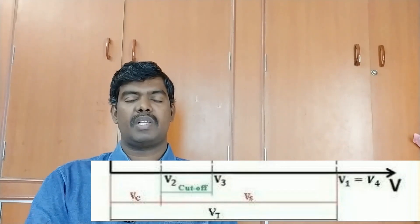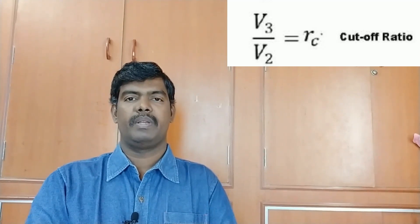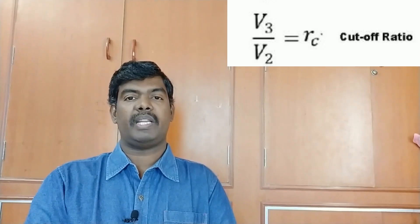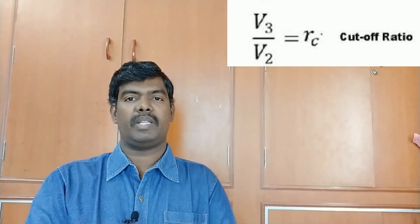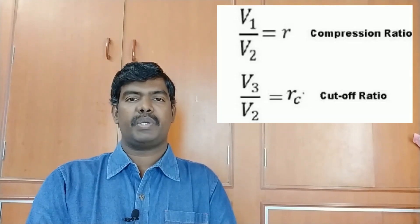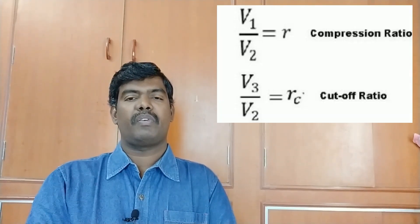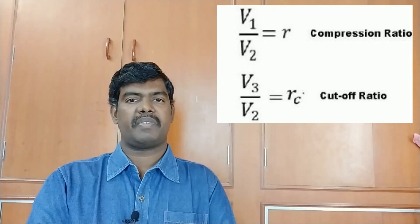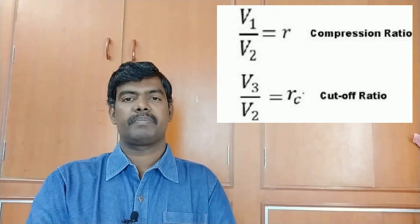Cutoff ratio rc is equal to V3 divided by V2 — the ratio of volume V3 to V2. Remember: cutoff means V3 minus V2, while cutoff ratio means V3 divided by V2. Compression ratio r equals total volume divided by clearance volume, that is V1 by V2. Cutoff ratio is denoted rc and compression ratio is denoted r in the derivation.